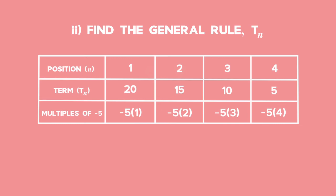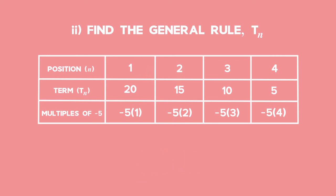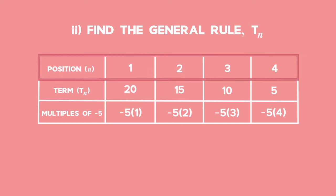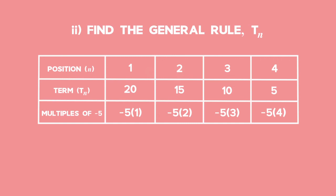We now look at position 2. Negative 5 times 2 gives us negative 10. To get from negative 10 to 15, we add 25. You should be able to see that there is a pattern forming. For position 3, we have minus 5 times 3, which is minus 15. The term in position 3 is 10. To get from negative 15 to 10, we add 25.